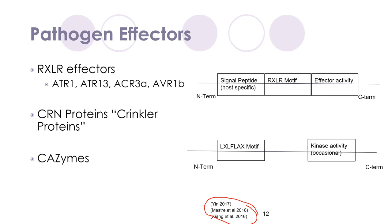Next, CRN proteins, or crinkler proteins, localize in the host's nucleus and show occasional kinase activity. They alter the host resistance response, although data has been relatively inconclusive in determining the exact mechanism of the protein. Finally, CAZymes are degrading enzymes that help the hyphal growth reach deeper into the body of the plant in the intercellular space. They have a similar effect to pectinases in dissolving the material in this space, providing evidence that cell wall degradation is an important part of successful colonization.